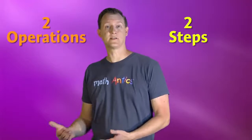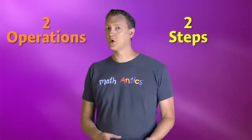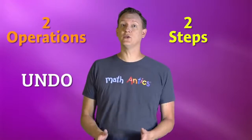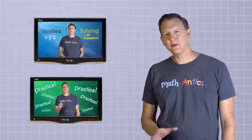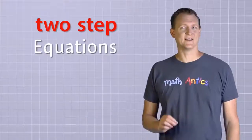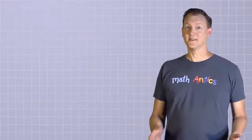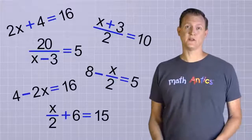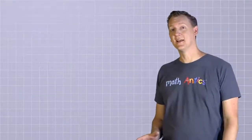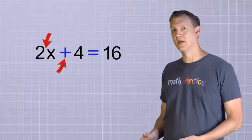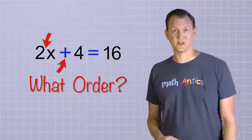Now, as you might expect, equations that have two arithmetic operations in them are going to require two different steps to solve them. In other words, to get the unknown all by itself, you'll need to undo two operations. But that doesn't sound too hard, right? We learned how to undo any arithmetic operation in the last two videos. But there are a couple of reasons that make two-step equations a little trickier to solve. The first is that there are a lot more possible combinations of those two operations. And the second is that when there's more than one operation, you have to decide what order to undo those operations in.